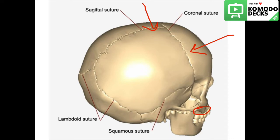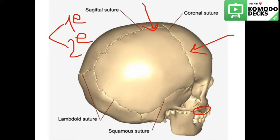As for cartilaginous joints, we have two types: the primary cartilaginous joint and the secondary cartilaginous joint. We also have a synovial type of joint, which is present in the TMJ region.